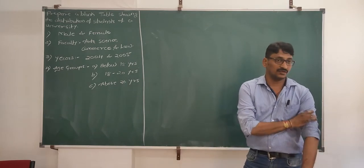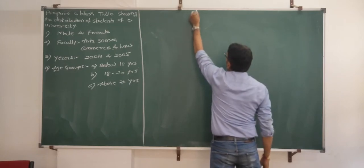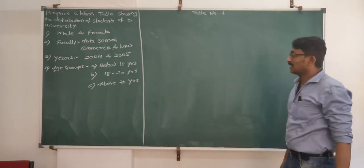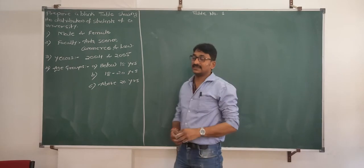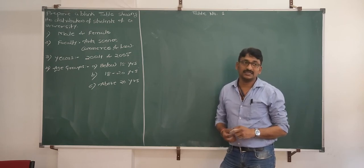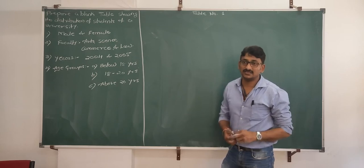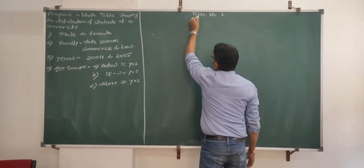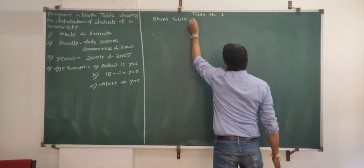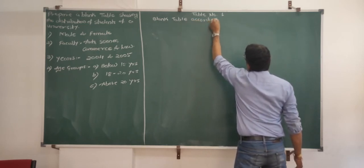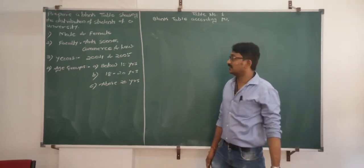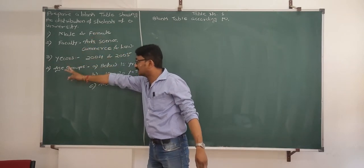We will start with the solution. Again the information is too much, so I will start with table number 1. Next, we have to write the title. The title is nothing but what we are going to prepare — whether it is a blank table or a statistical table. Here we have to prepare a blank table. So on the next line you can write: Blank Table, according to — now we are preparing this blank table based on what information? We have to prepare it based on male and female, faculty, years, and age group.